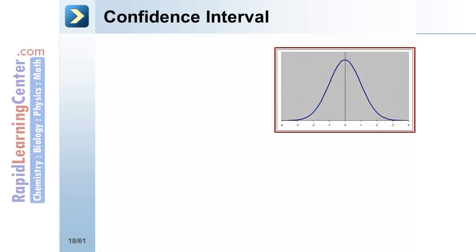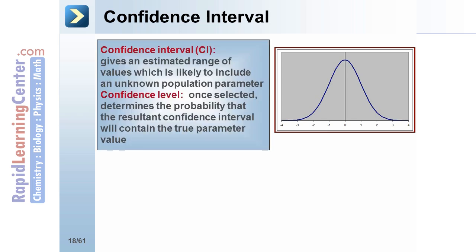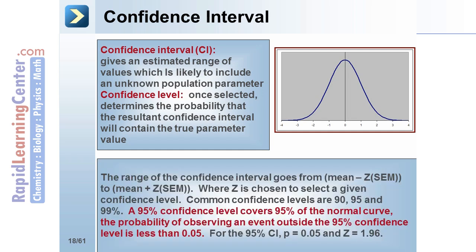On the previous slide we mentioned confidence interval. A confidence interval gives an estimated range of values which is likely to include an unknown population parameter. Confidence interval is often abbreviated CI. A confidence level, once selected, determines the probability that the resultant confidence interval will contain the true parameter value.